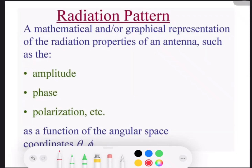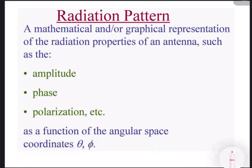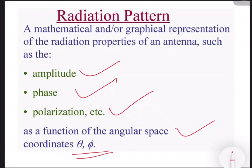When we are representing the radiation pattern in mathematical equations or on a graph, the three important parameters we keep in mind are the amplitude of the signal, the phase of the signal, and the polarization of the signal. That's the reason why we consider the functions of angular space coordinates — theta and phi. We can represent the radiation pattern in terms of amplitude, phase, and polarization.